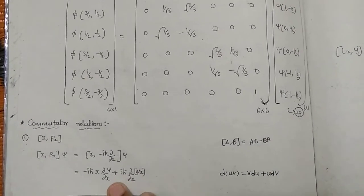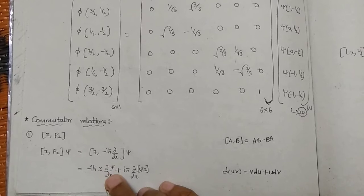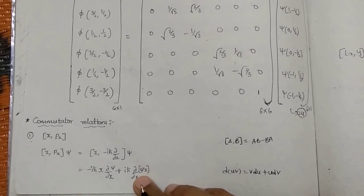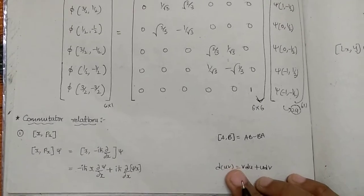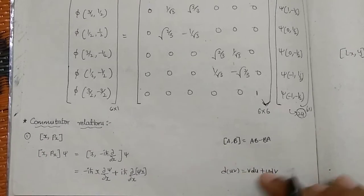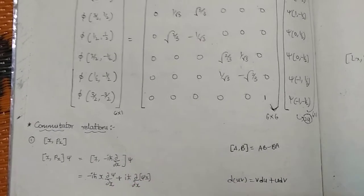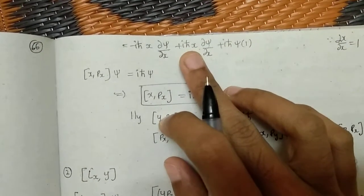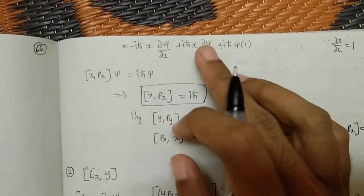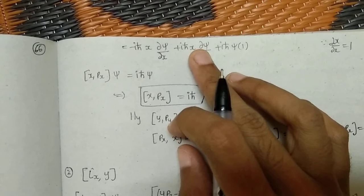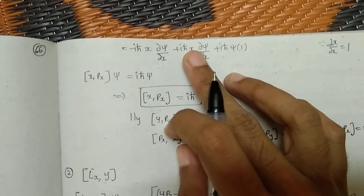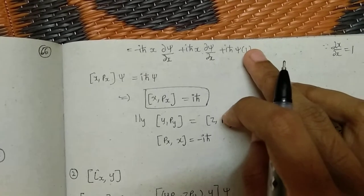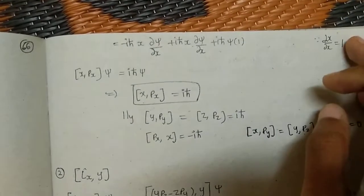Since we have AB minus BA, and there is already a minus, minus into minus gives plus. As you see, one term is simply dou xi by dou x, but the other is dou of (xi times x) by dou x, which is of the UV form — differentiation of UV equals V dU plus U dV. Applying this product rule formula: keeping iħ aside, in the place of U we have xi and in the place of V we have x, so we get x dou xi by dou x plus xi times dou x by dou x.